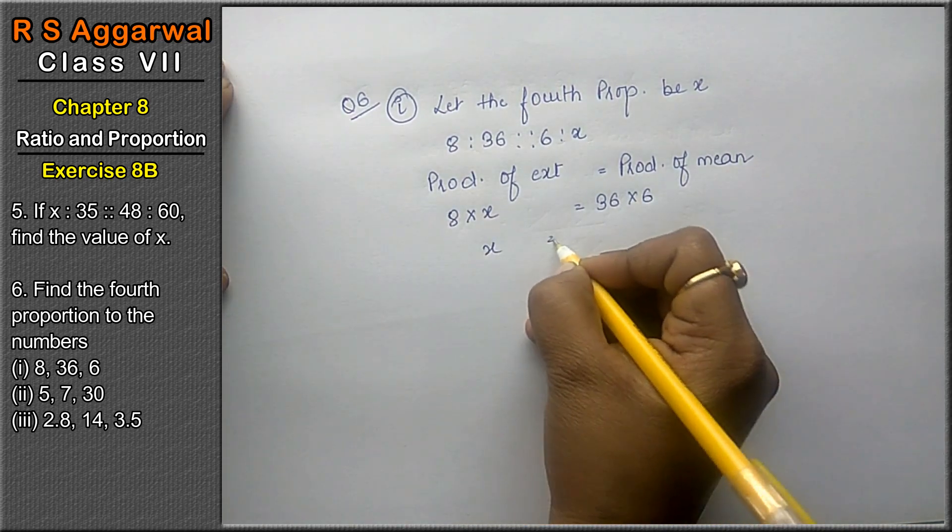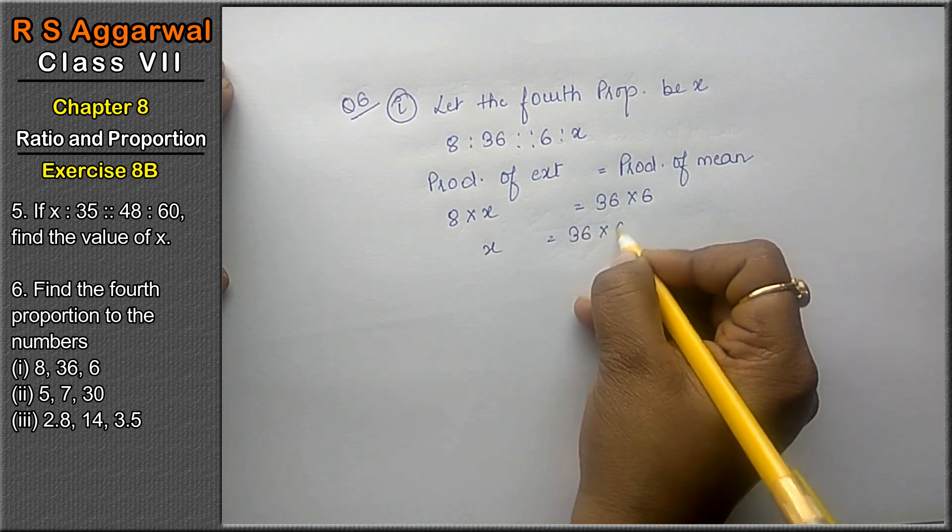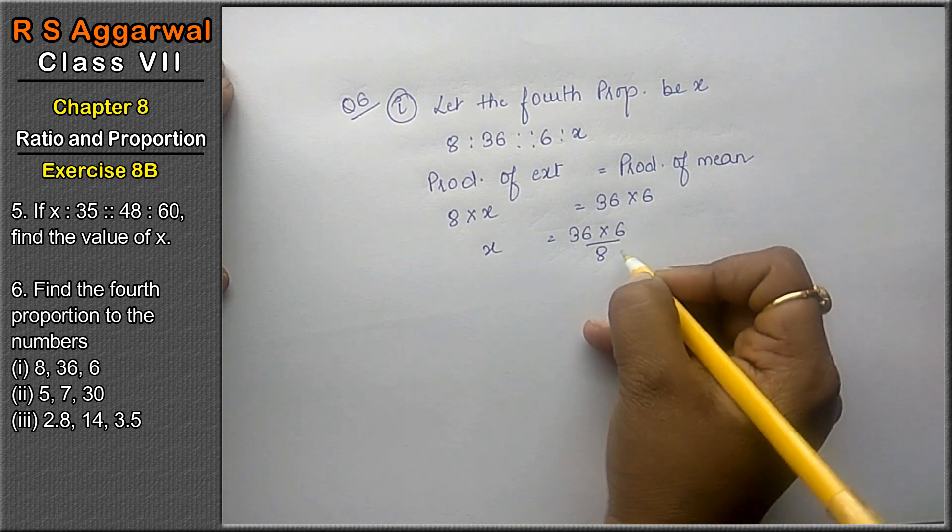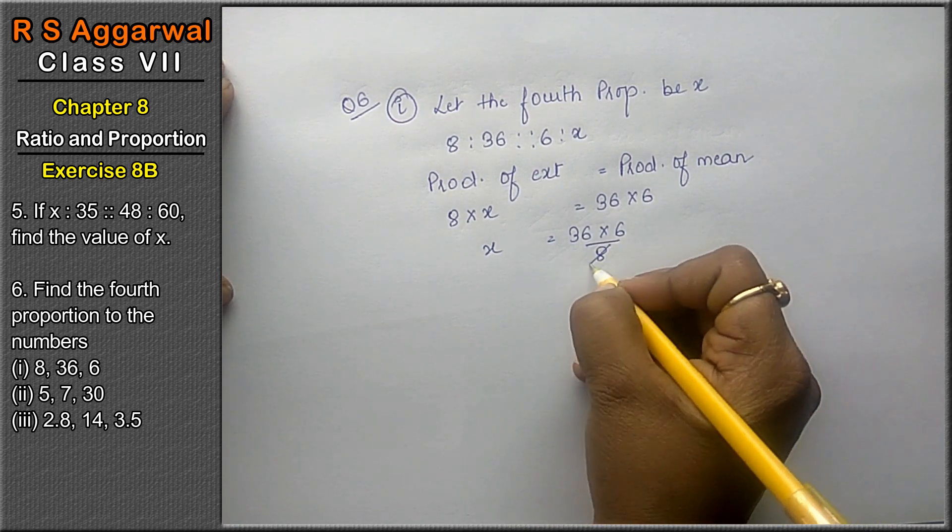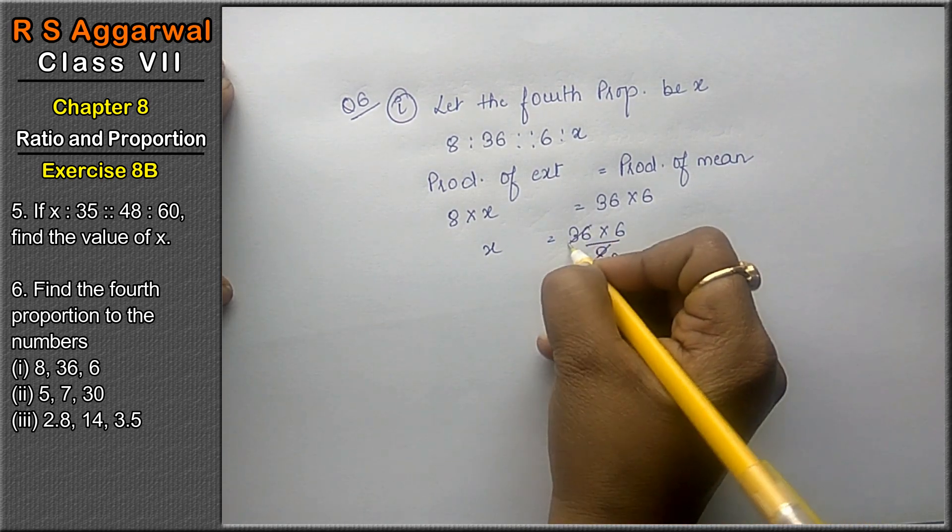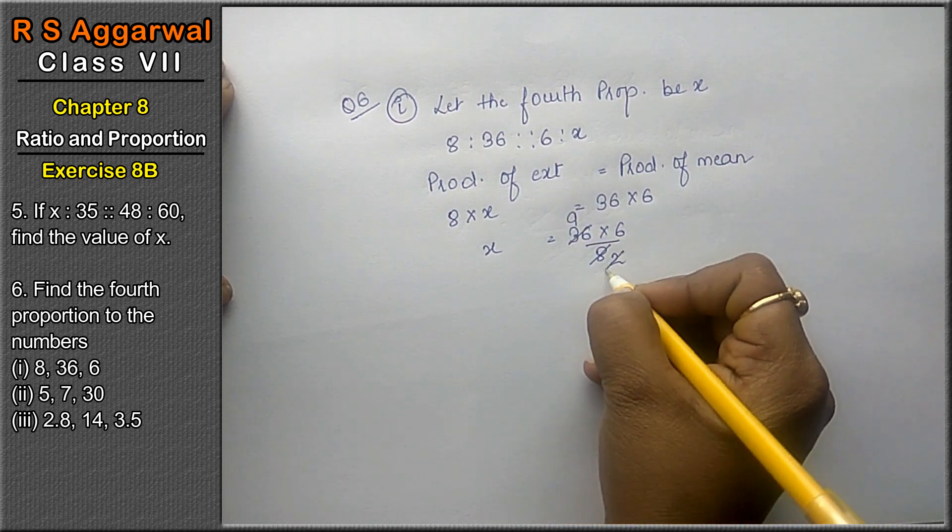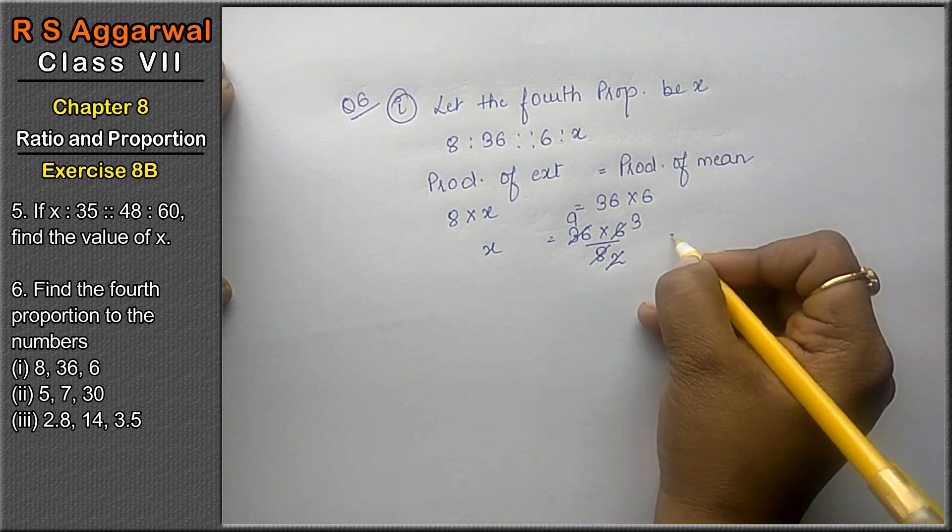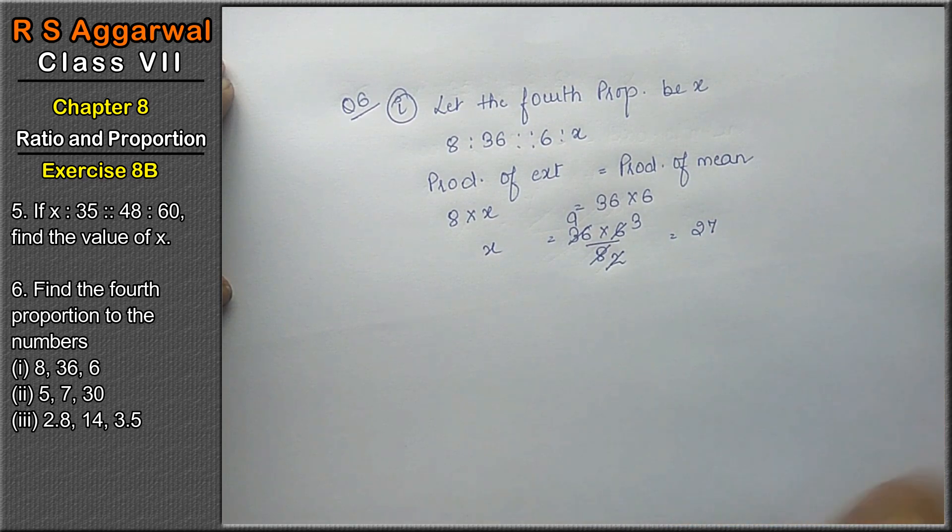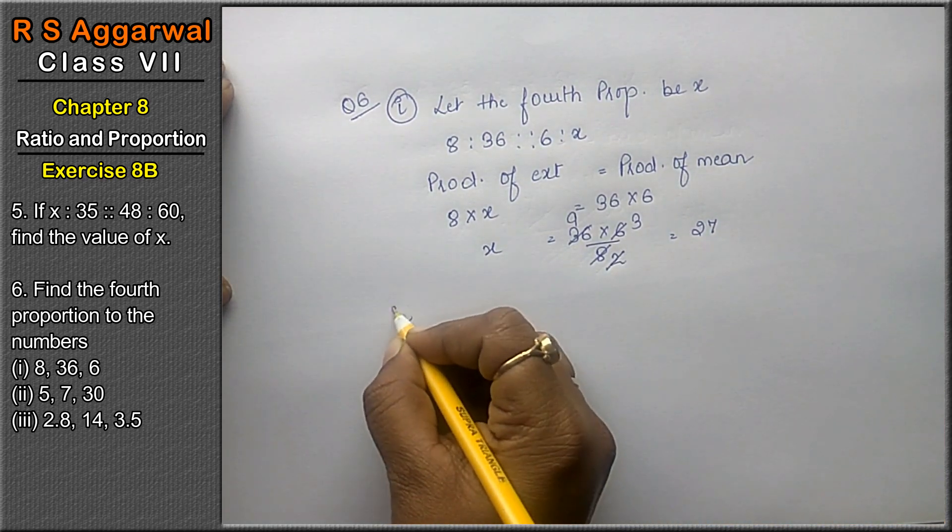X as it is. So this is 36 into 6 upon 8. Now 4 2s are 8, 4 9s are 36. 2 1s are 2, 2 3s are 6. The answer is 27. Let's do second part.